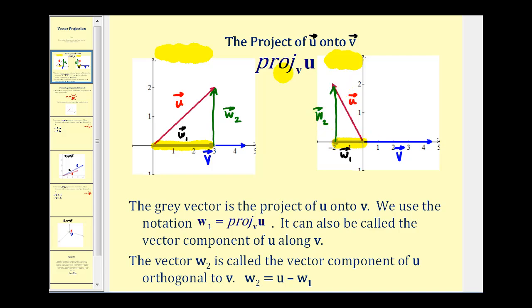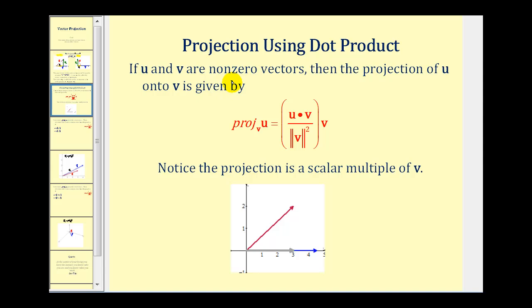Now let's take a look at a formula that will allow us to find the projection of u onto v. If u and v are non-zero vectors, then the projection of u onto v is given by this formula here. Notice that the projection of u onto v is going to be a scalar multiple of vector v — the dot product would be a numerical value, and so would the magnitude of vector v squared. Let's use this formula to find some vector projections and then look at it graphically.